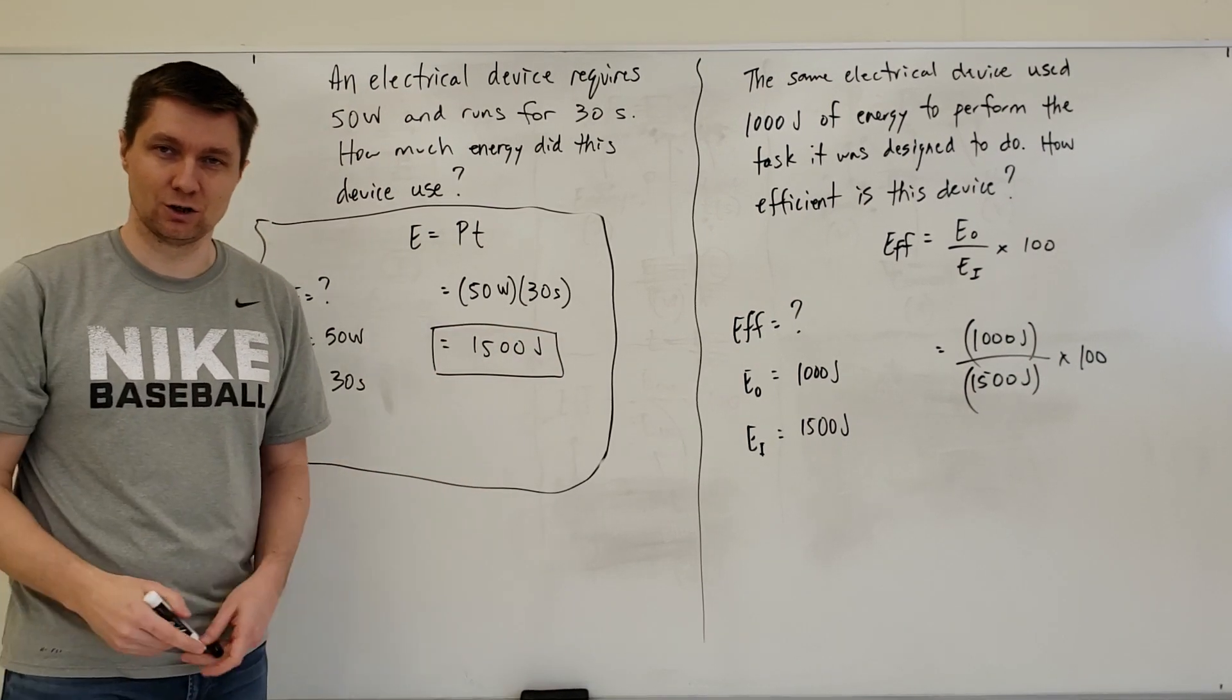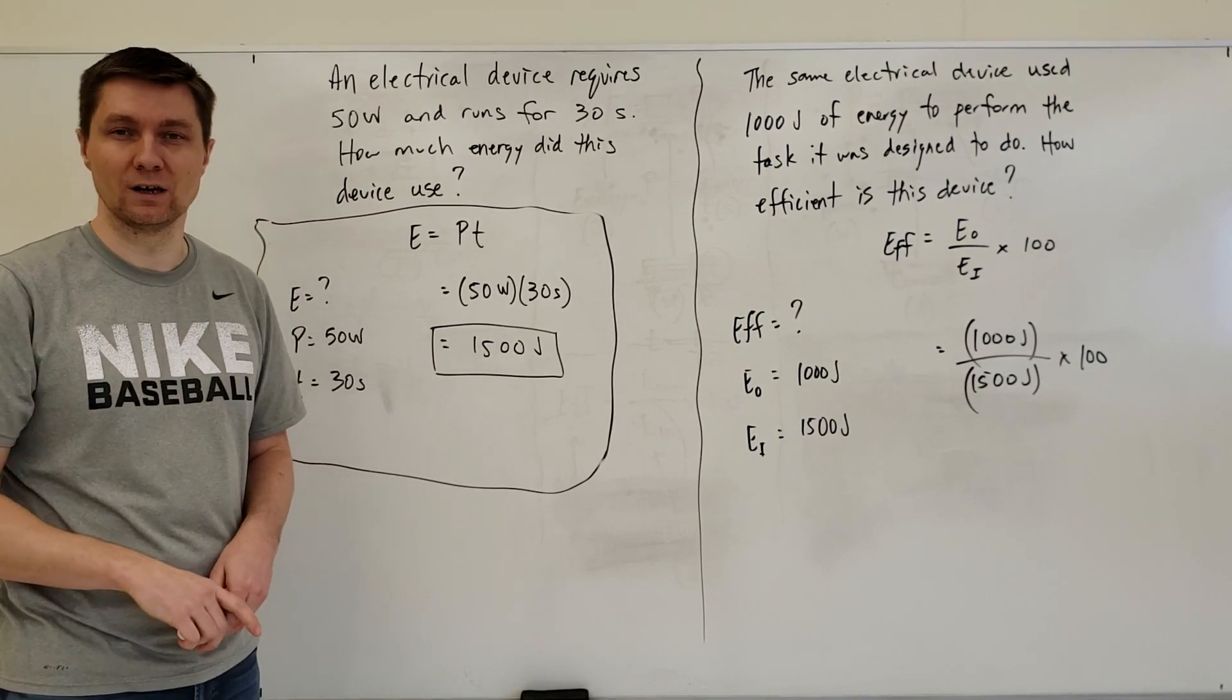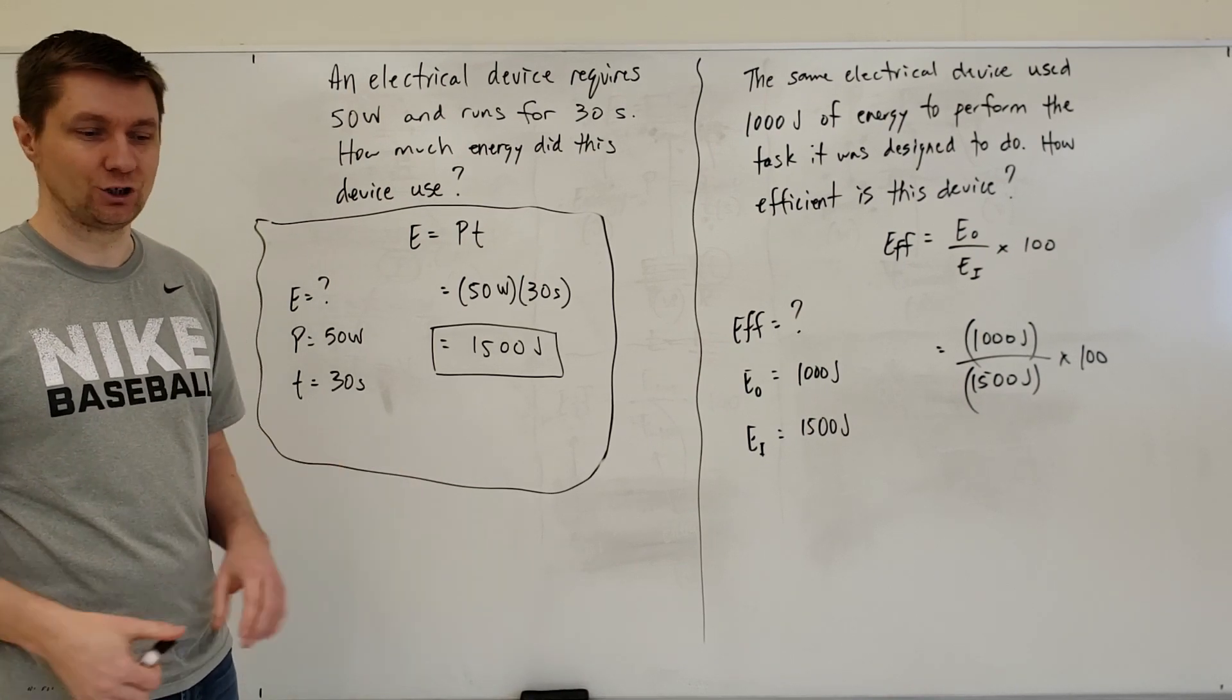You can round your answers to the nearest whole number, or if it's zero decimal something, you can write it to two decimal places.